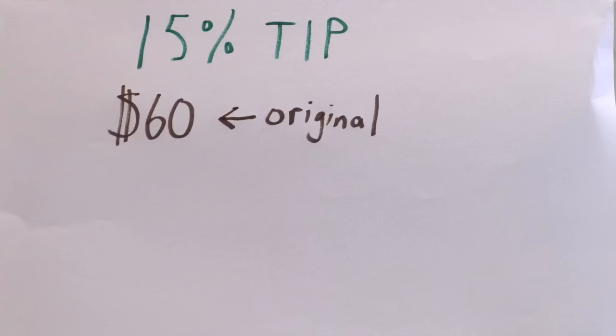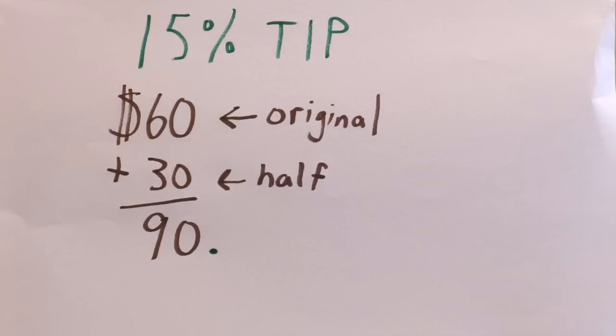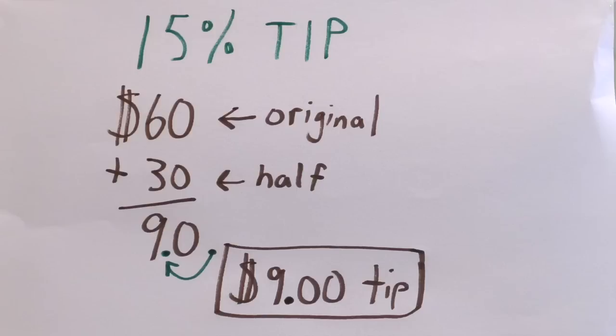Just take the original price, add half of the price to the original, and move the decimal one digit to the left. That's it. That's all you have to do.